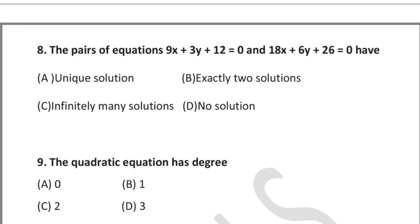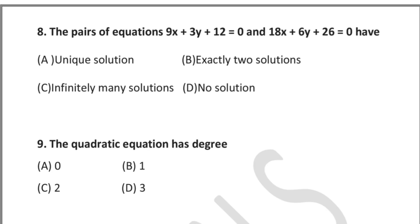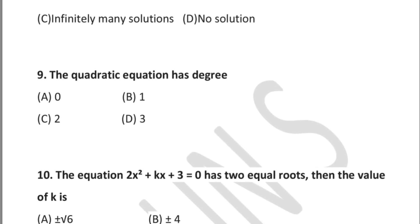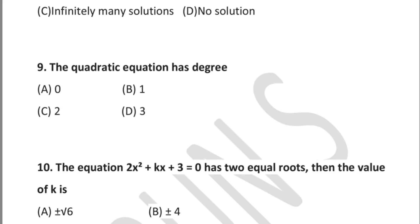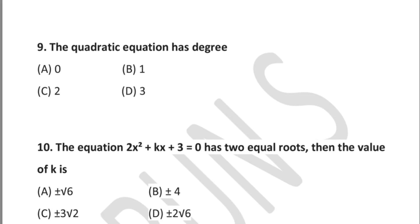Question 8: the pair of equations 9x + 3y + 12 = 0 and 18x + 6y + 26 = 0 have — option A: unique solution, option B: exactly two solutions, option C: infinitely many solutions, option D: no solution. Question 9: a quadratic equation has degree — option A: 0, option B: 1, option C: 2, option D: 3.